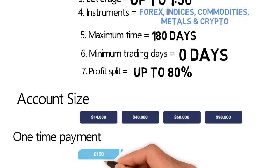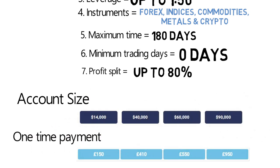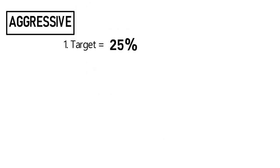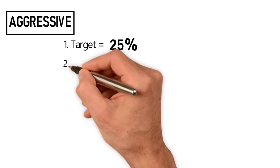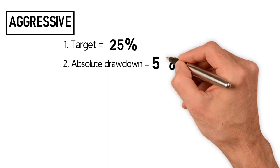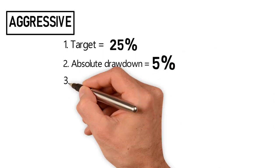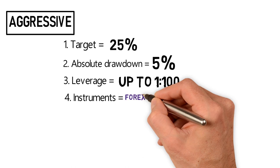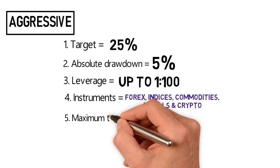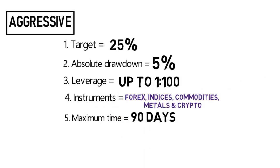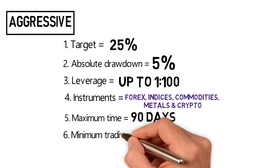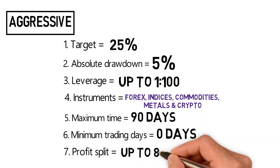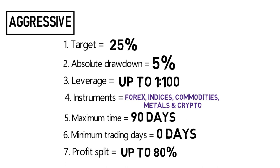In the Aggressive mode of instant funding, the target is 25%, drawdown is the same, and leverage is up to 1:200. Instruments are the same, and the maximum time to achieve the first milestone target of 25% is 90 days. The fees are the same and the rest of the parameters are the same.